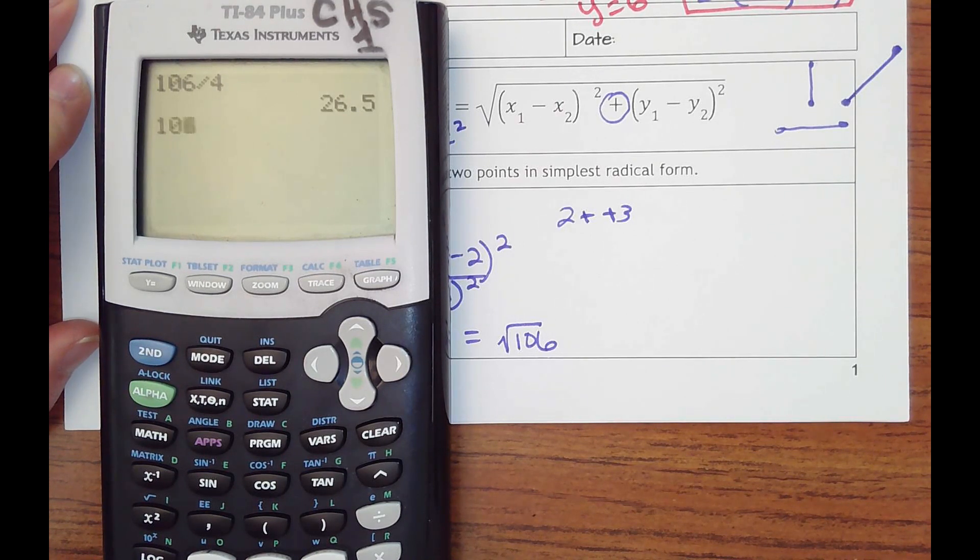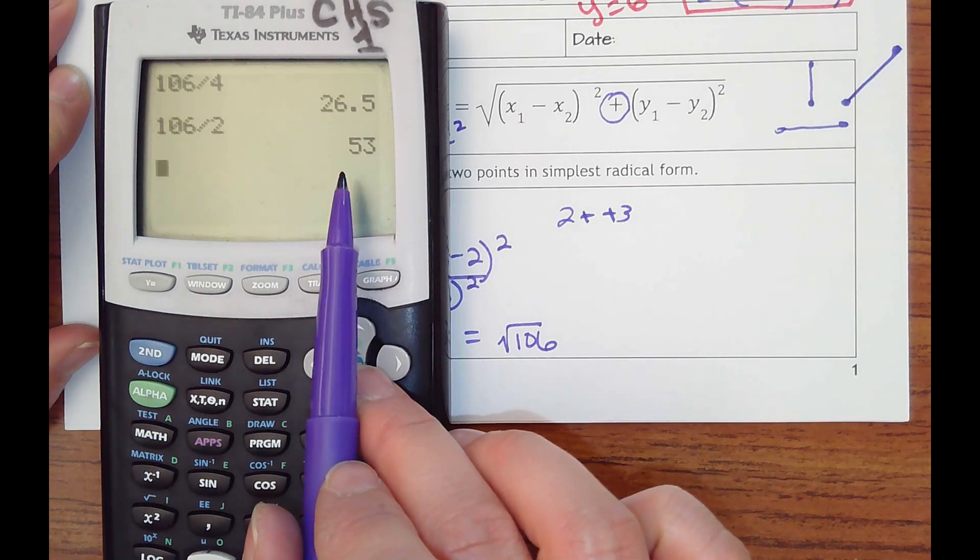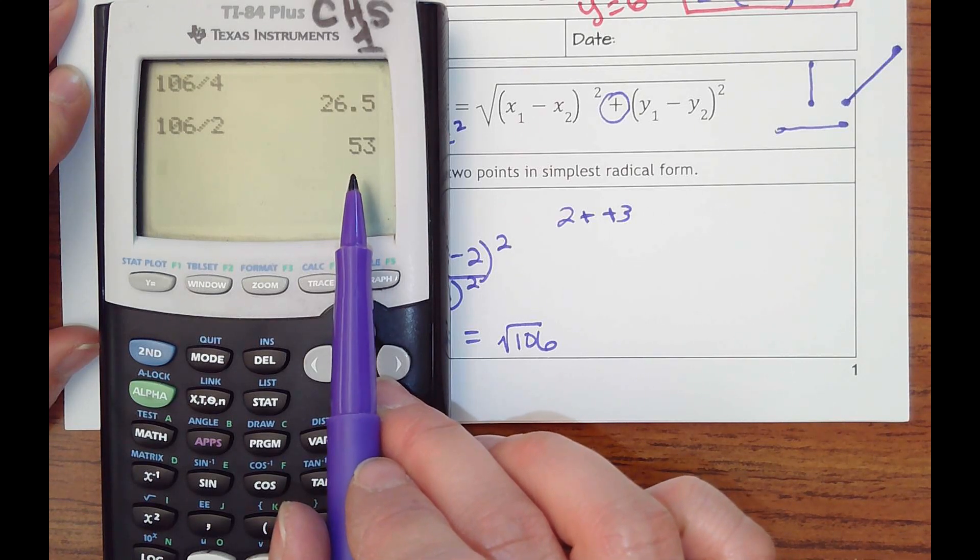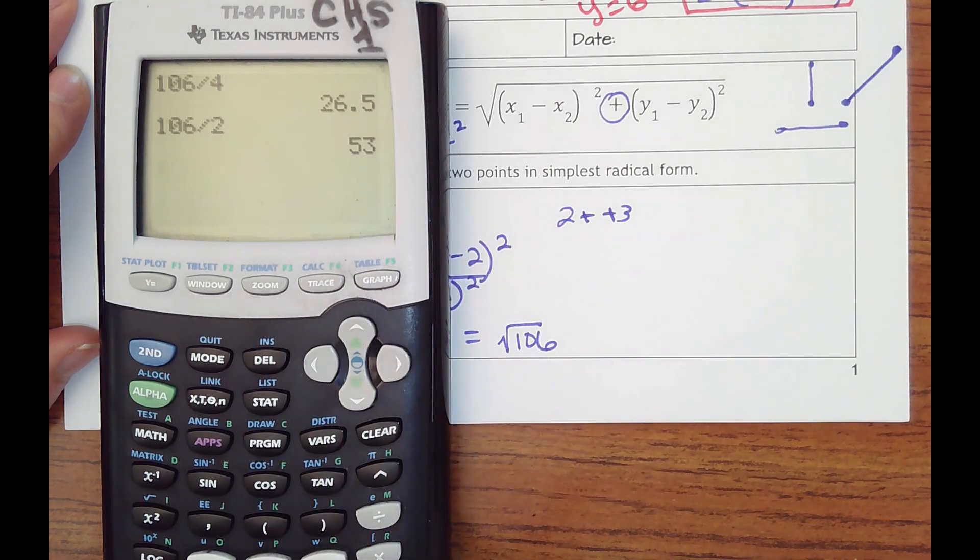So 106 divided by 2 would be 53. Think about what's in 53, would be anything? Let's see. I don't think so. No, because it's not 7. I think that's simplified.